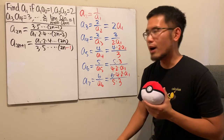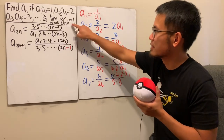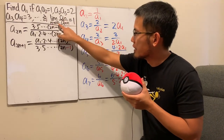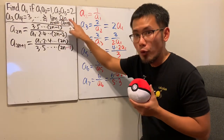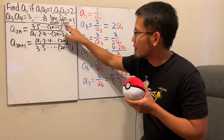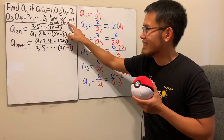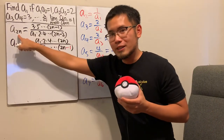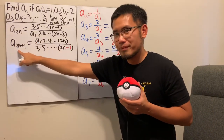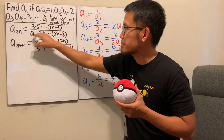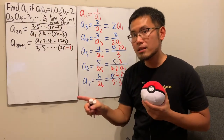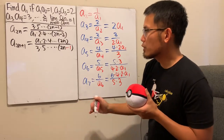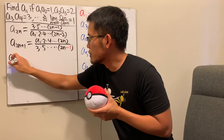Now, what else can we do? Let's utilize the limit condition. The limit as n goes to infinity of a_n over a_{n+1} equals 1. Here the index is 2n, so we can divide a_{2n} by a_{2n+1}, take the limit, and we know it has to equal 1. We just have to do this carefully.